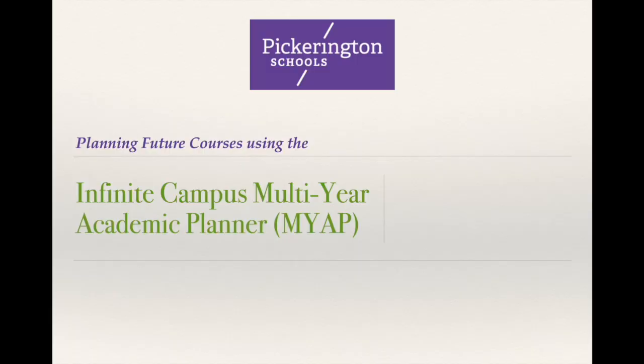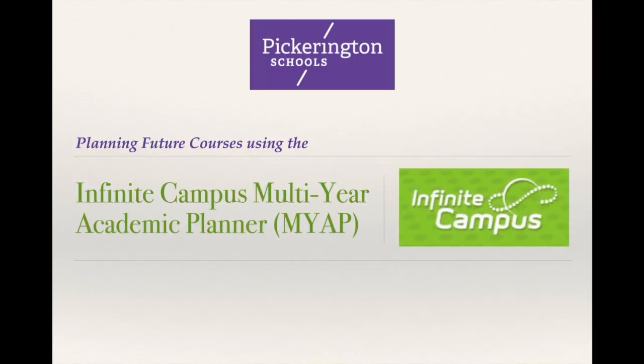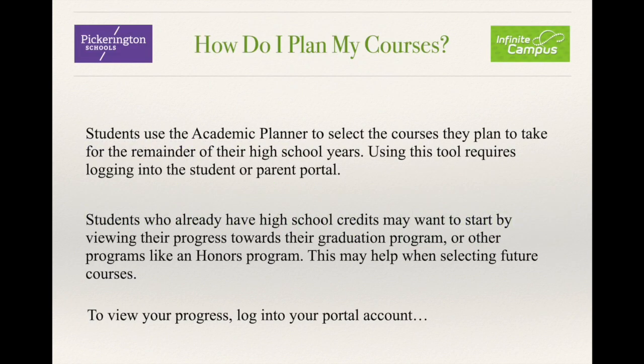Planning future courses using the Infinite Campus Multi-Year Academic Planner. Students use the Academic Planner to select the courses they plan to take for the remainder of their high school years. Using this tool requires logging into the student or parent portal. Students who already have high school credits may want to start by viewing their progress towards their graduation program or other programs like an honors program, as this may help when selecting future courses.